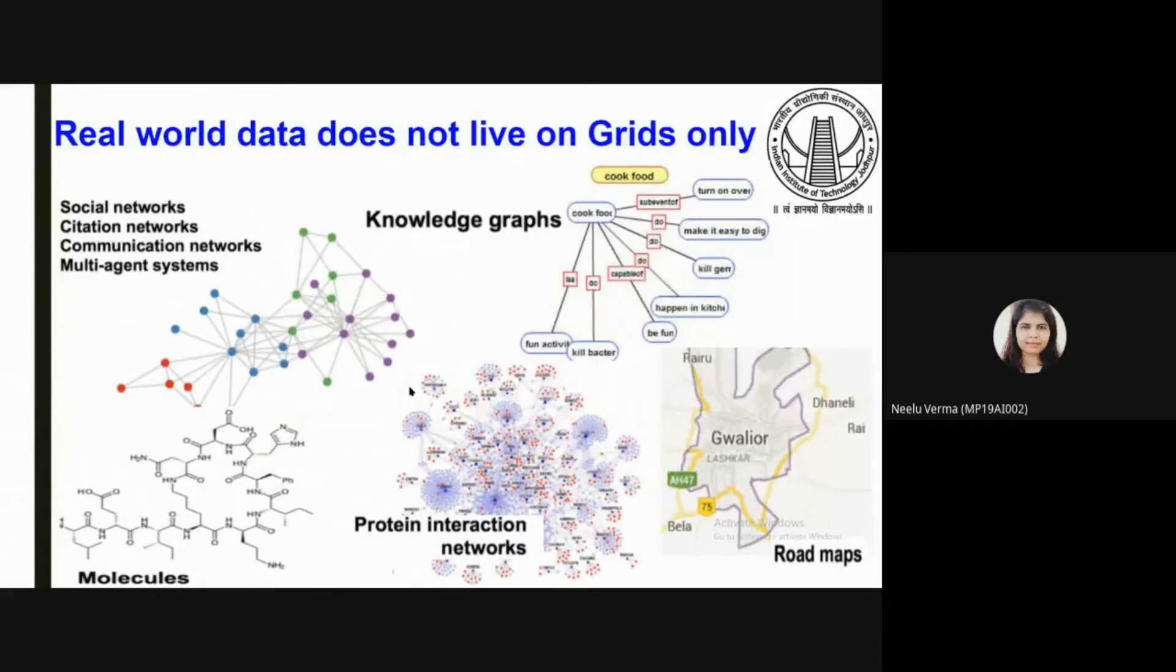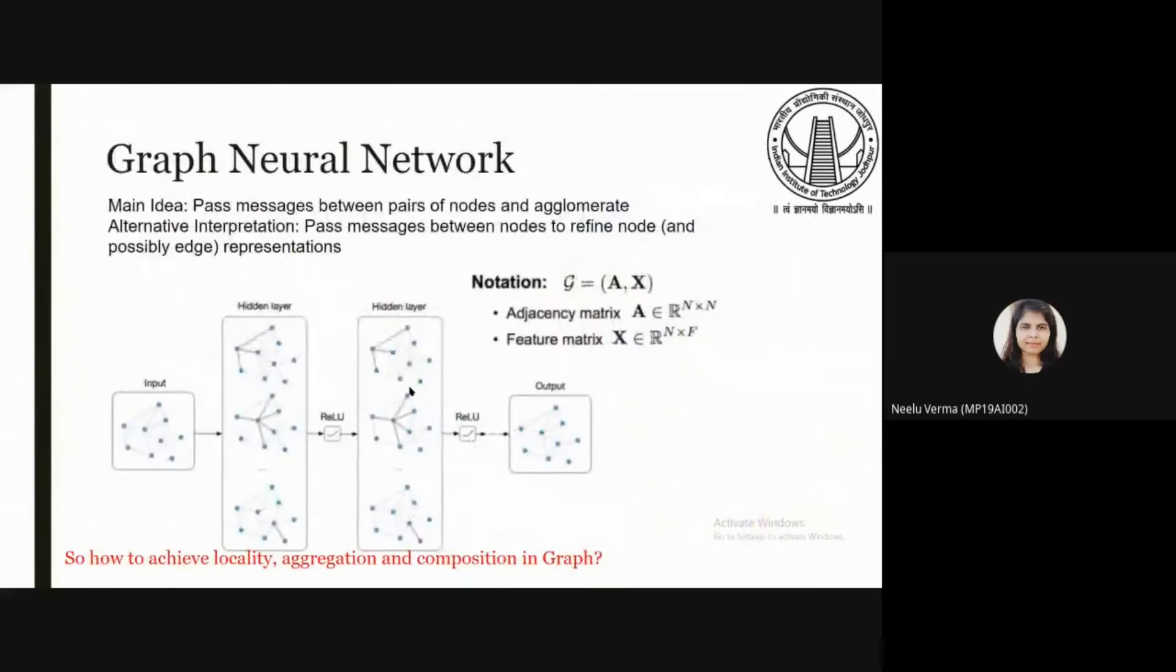The main idea of graph convolutional networks is to pass messages between pairs of nodes and aggregate them. The alternative interpretation is to pass messages between nodes to refine node representations. The main point is how we achieve locality, aggregation, and composition of the graph.